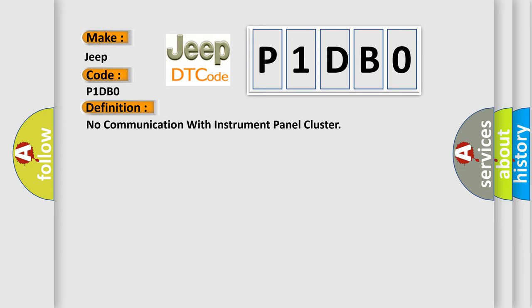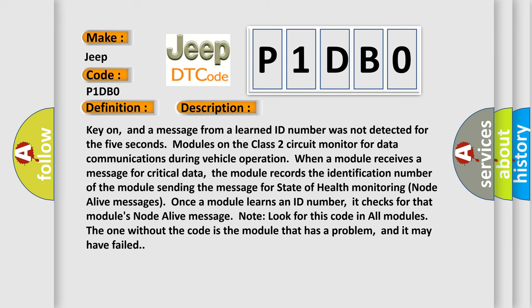Here is a short description of this DTC code. Key on, and a message from a learned ID number was not detected for 5 seconds by modules on the Class 2 circuit monitor. For data communications during vehicle operation, when a module receives a message for critical data, the module records the identification number of the sending module for state-of-health monitoring via node alive messages. Once a module learns an ID number, it checks for that module's node alive message. Look for this code in all modules — the one without the code is the module that has a problem and may have failed.